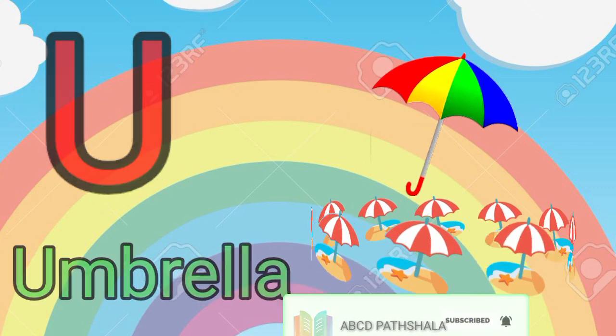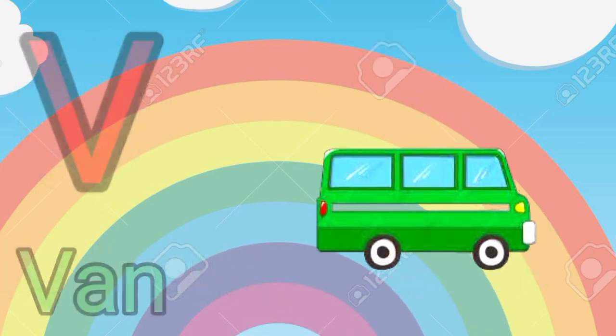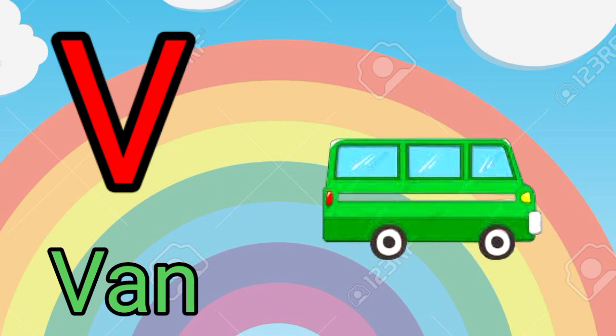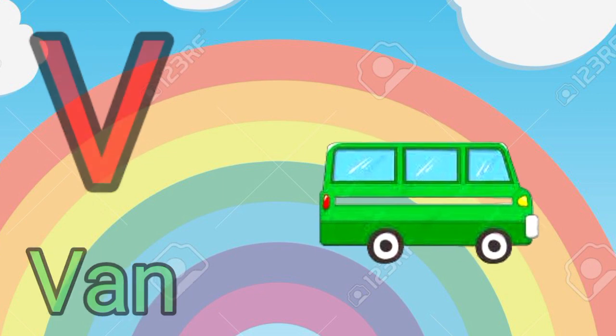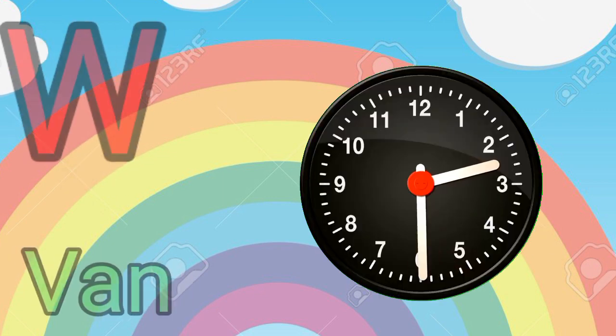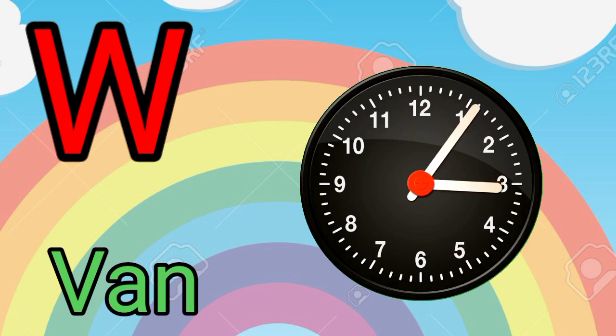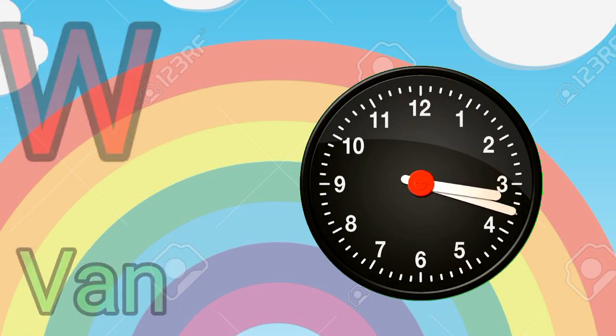U for umbrella, V for band, W for horse.